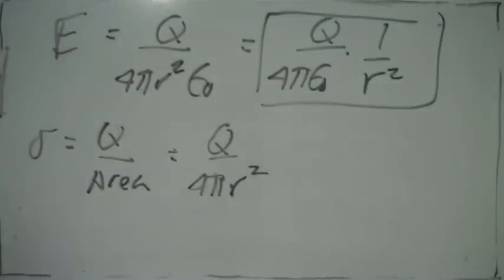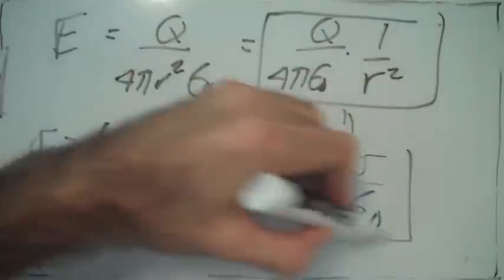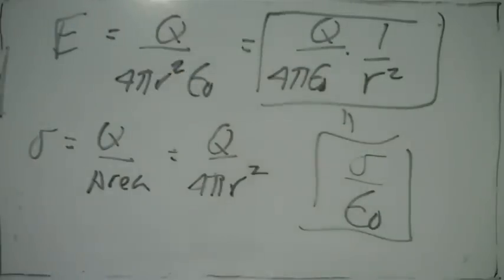If we plug this into our expression for the electric field, we find the electric field is just sigma divided by epsilon naught. It's not divided by 2 epsilon naught, it's just sigma divided by epsilon naught.